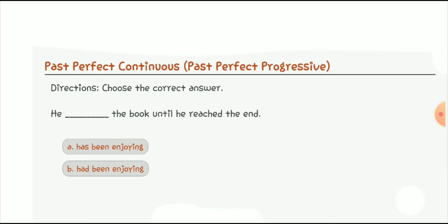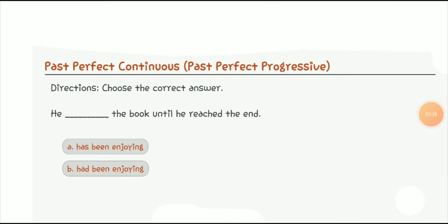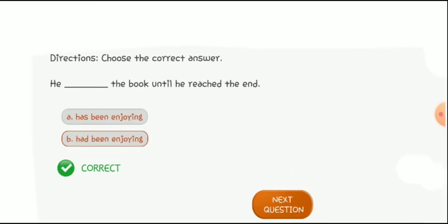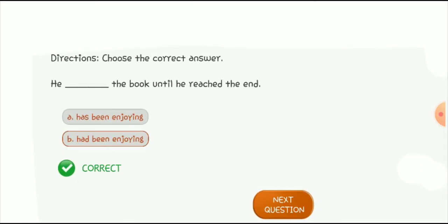Here is the quiz on past perfect continuous tense. Directions: choose the correct answer. Number one: 'He ___ the book until he reached the end.' I am going to choose option B, because we use 'had been' plus verb plus '-ing' after the subject in the past perfect continuous. So 'had been enjoying' is the correct option: 'He had been enjoying the book until he reached the end.'